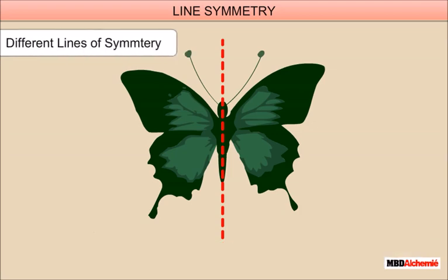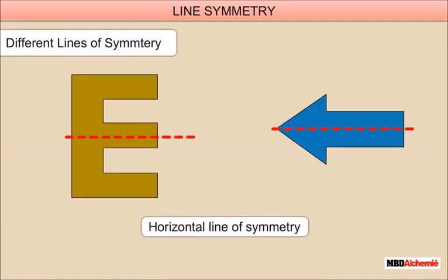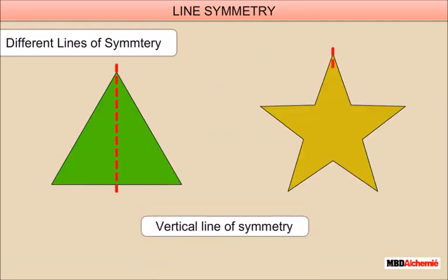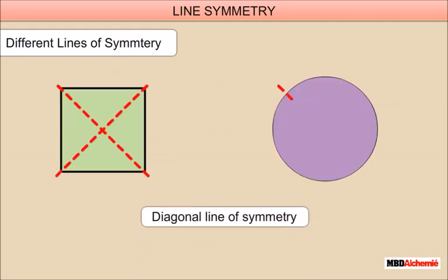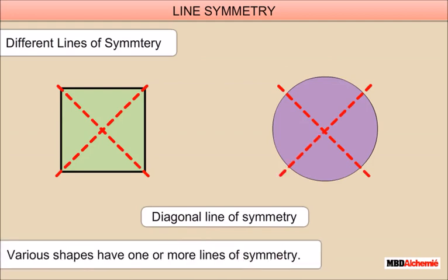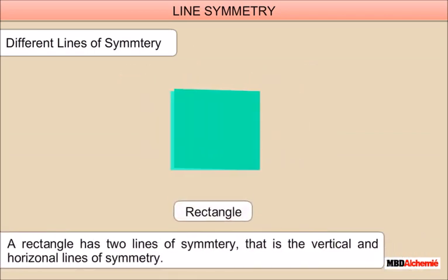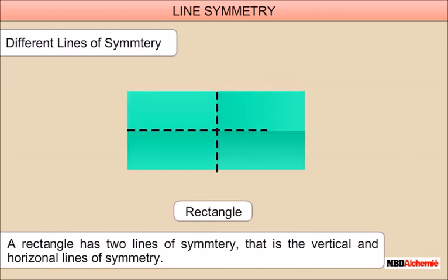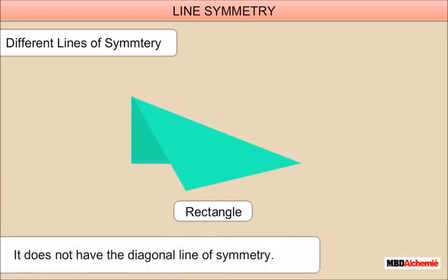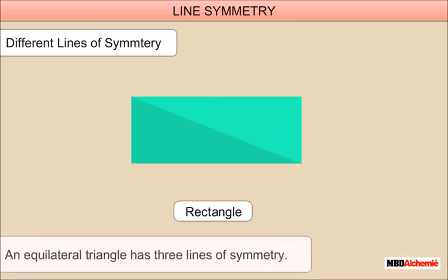Different lines of symmetry: Let's look at different lines of symmetry — horizontal line of symmetry, vertical line of symmetry, and diagonal line of symmetry. Various shapes have one or more lines of symmetry. For example, a butterfly has one line of symmetry, that is the vertical line of symmetry. A rectangle has two lines of symmetry — the vertical and horizontal lines of symmetry. It does not have the diagonal line of symmetry.